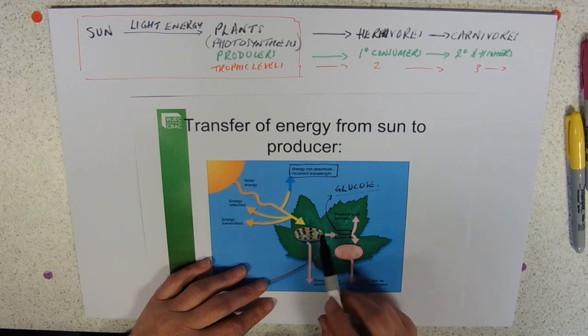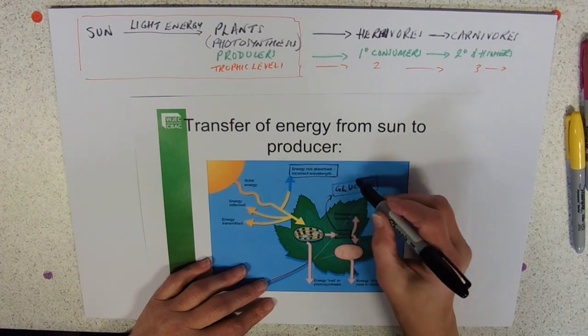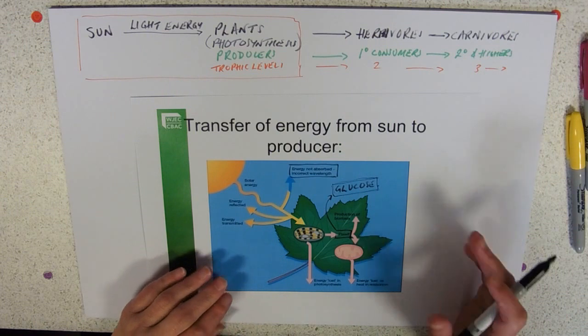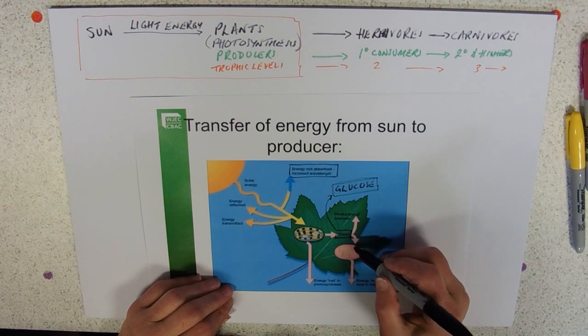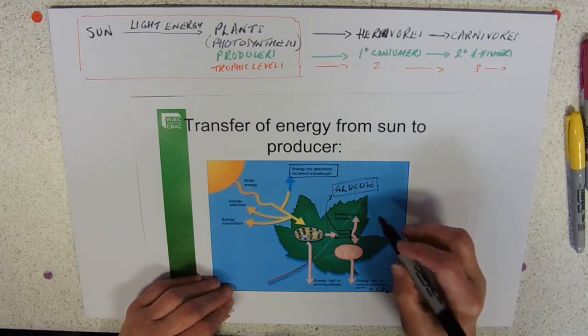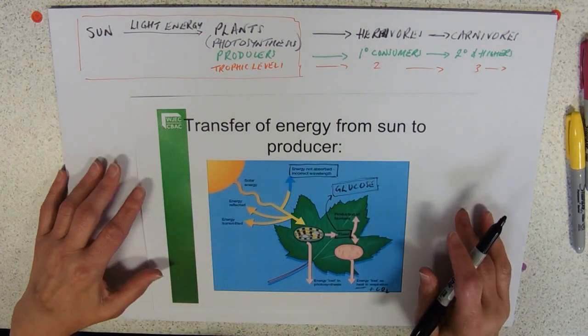That represents all of the light energy that has been fixed, used to fix carbon dioxide into organic molecules. There are two main things that can happen to that. One is that it can be respired and will end up as heat and respiration, giving back out carbon dioxide. The other thing is it can be used to build new cell materials.